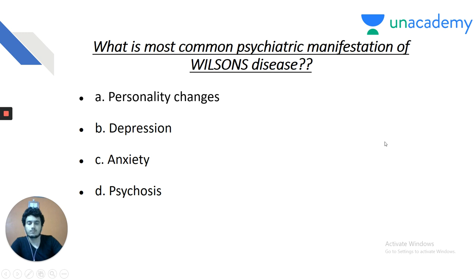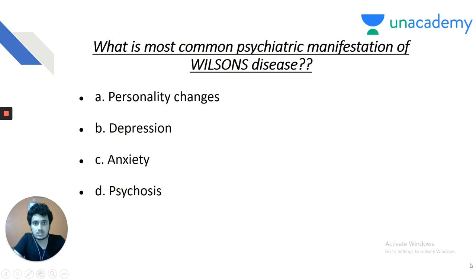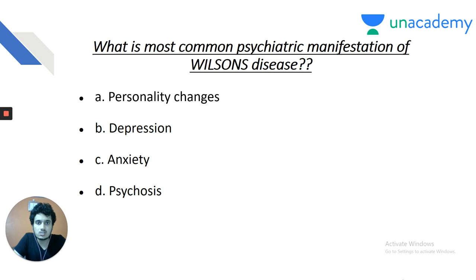Question 7: What is the most common psychiatric manifestation of Wilson's disease? Options: personality changes, depression, anxiety, psychosis. Despite our patient presenting with depression, the most common psychiatric manifestation is personality changes. Depression is seen in only about 20-30% of patients. Personality changes are the most common psychiatric manifestation of Wilson's disease.